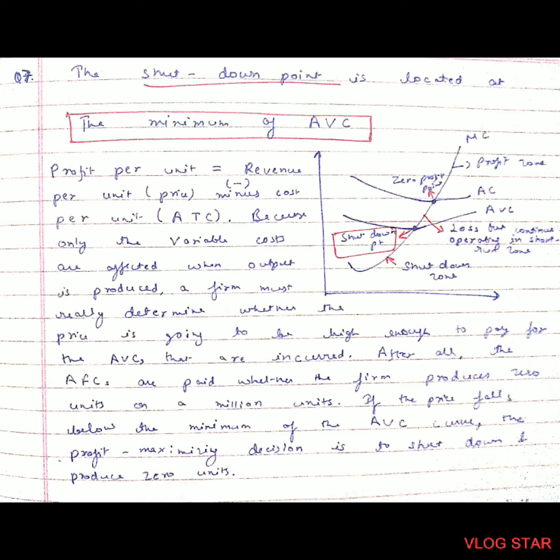Profit per unit equals revenue per unit minus cost per unit. Since only variable costs are affected when output is produced, a firm must determine whether price is high enough to cover average variable costs. After all average variable costs are paid, whether the firm produces zero units or a million units — if the price falls below the minimum of the average variable cost curve, the profit-maximizing decision is to shut down and produce zero units.